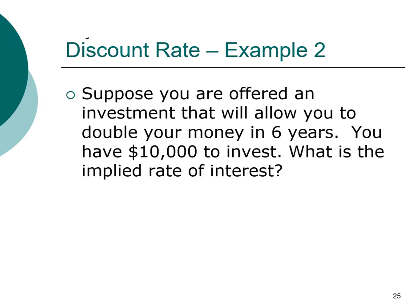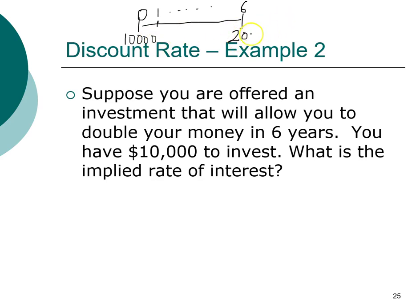Welcome back. You have $10,000 to invest, and this investment says you will double your money. Let's put all the information on our timeline. Your investment horizon is six years. You start with $10,000, and when you double your money, your $10,000 grows to $20,000 at the end of six years. You are asked to find the interest rate. Did you get 12.25 percent? If so, congratulations!